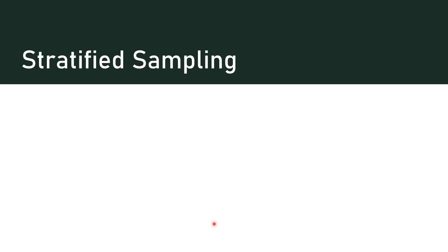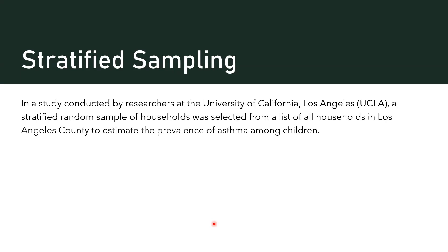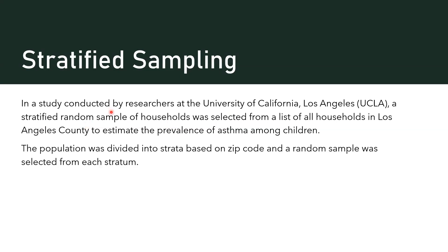Once we have our population broken into strata, we randomly select from those strata, but the random sample from each stratum has to be proportioned to its size in the population. Otherwise you could get a sample that isn't representative of the population.